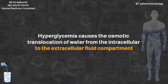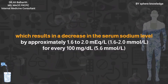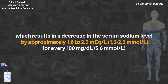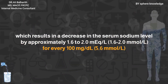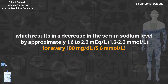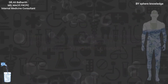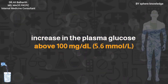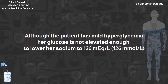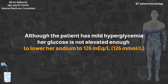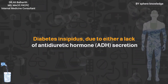Hyperglycemia causes the osmotic translocation of water from the intracellular to the extracellular fluid compartment, which results in a decrease in serum sodium level by approximately 1.6 to 2 milliequivalents for every 100 mg or 5.6 mmol increase in plasma glucose above 100. Although the patient has mild hyperglycemia, her glucose is not elevated enough to lower her sodium to 126 milliequivalents.